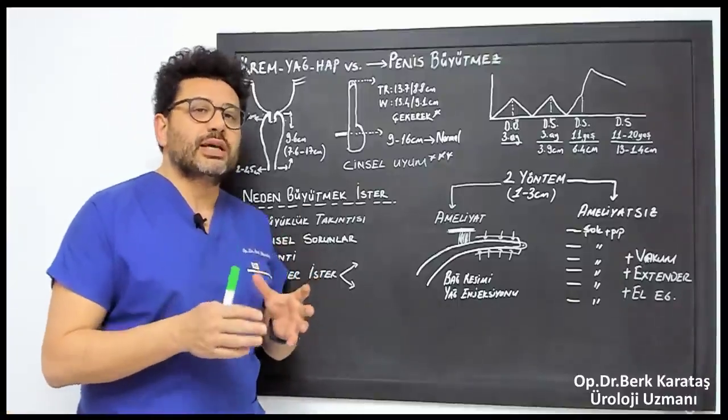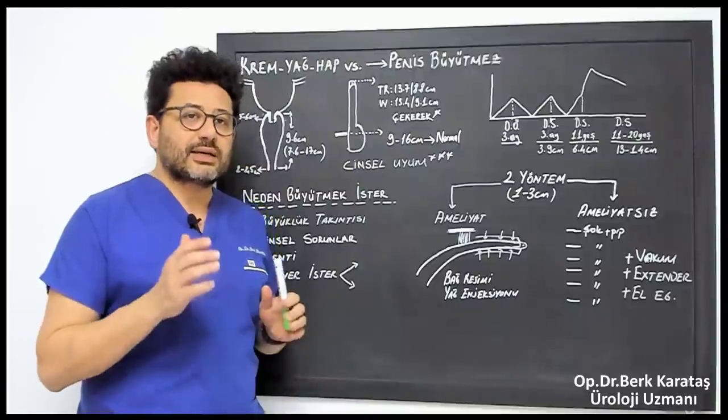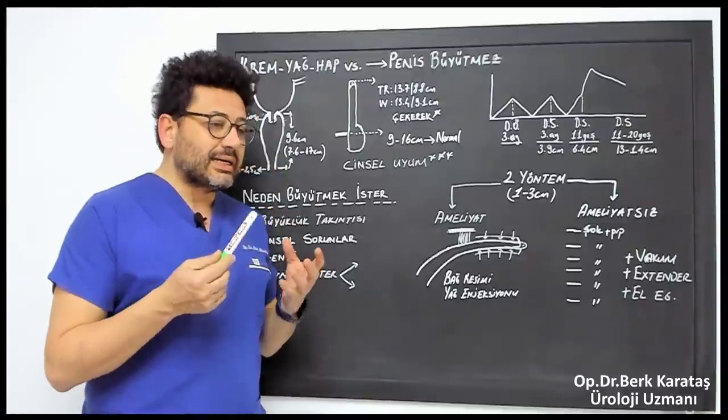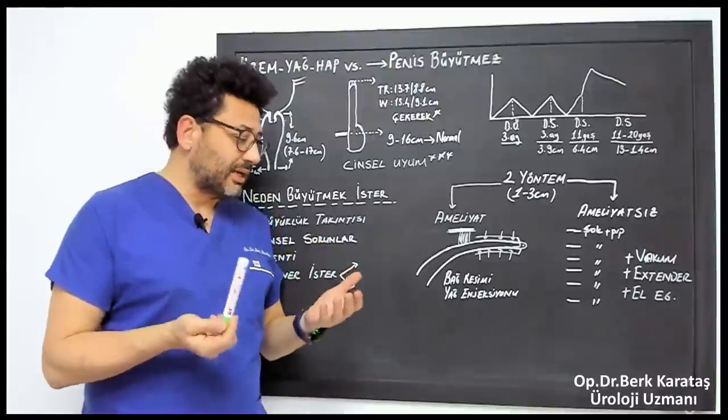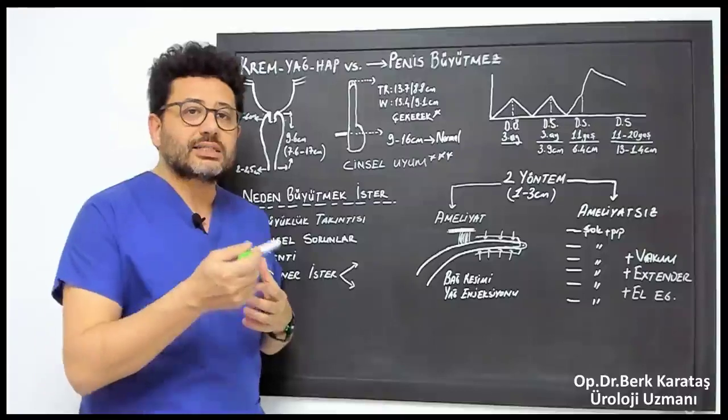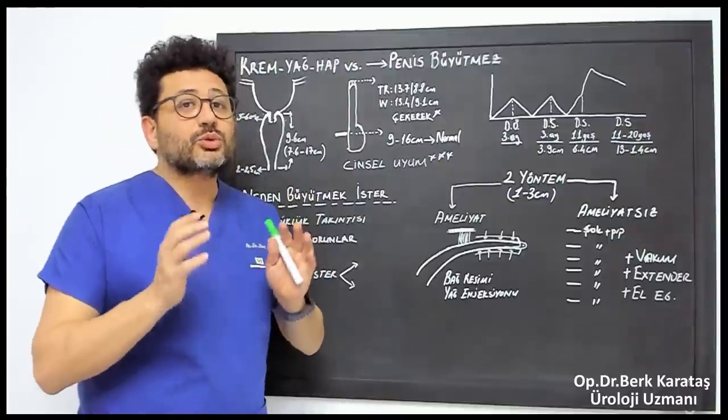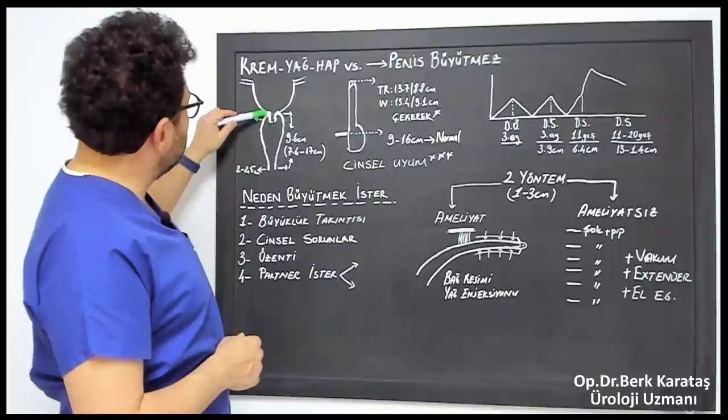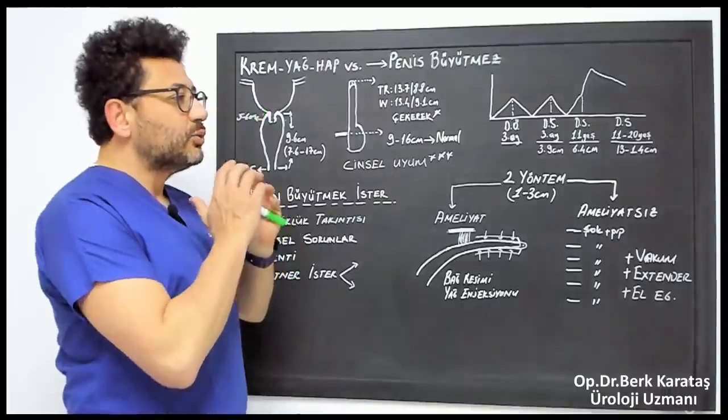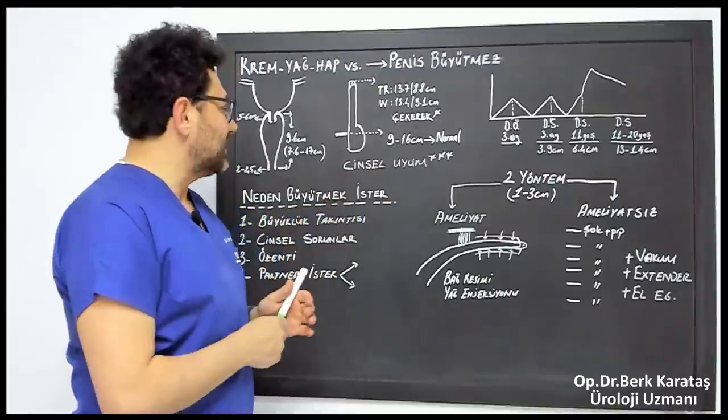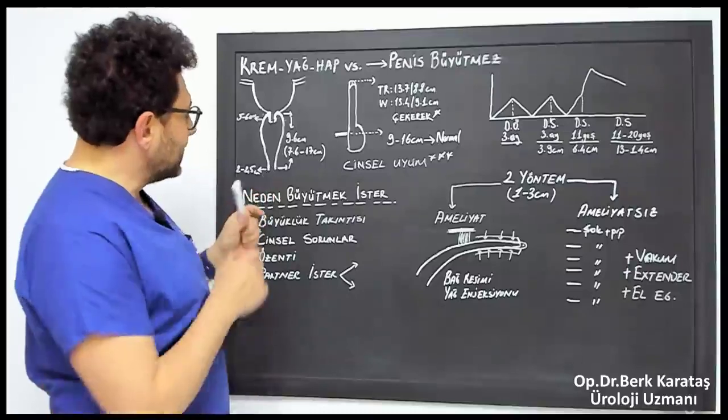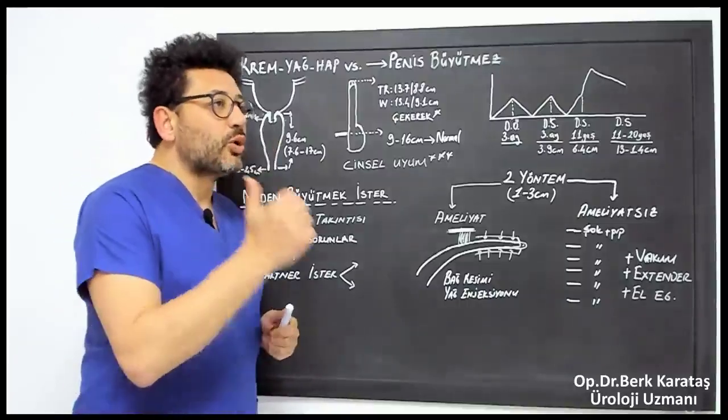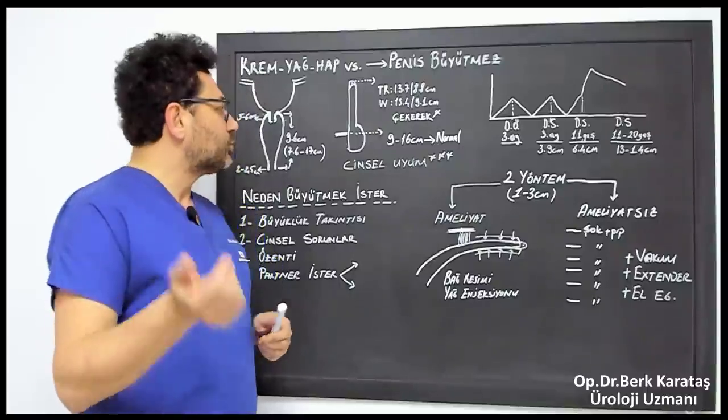When we talk about penis size, there is always a subject we skip. Sometimes I do this, other doctors also see it. We skip the state of the vagina. The penis is not an organ used alone. It is very important to know the width and length of the vagina which will complement it on the opposite side. The vagina is like a straight pipe that expands slightly to the back. The entrance is 2.5 centimeters wide, and in the back it can reach 5 to 6 centimeters. This may be more in people who have given birth normally.